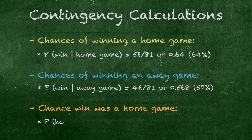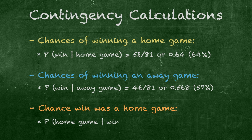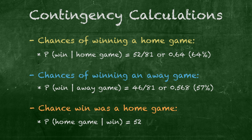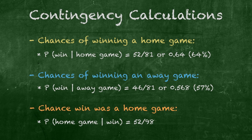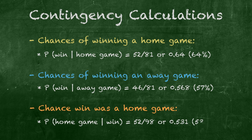What about determining, of all the wins, the probability that it was a home game? You mean P — the probability of a home game given that it was a win — equals 52 home game wins divided by 98 total wins, or .531, about 53 percent. Bang!